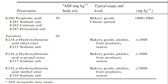Parabens — parahydroxybenzoic acid esters — include ethyl ester (E214), its sodium salt (E215), propyl ester (E216), its sodium salt (E217), methyl ester (E218), and its sodium salt (E219). They are used in bakery goods, pickles, fruit products, and sauces at less than 2000 mg per kg.